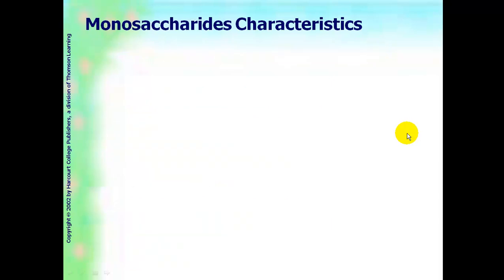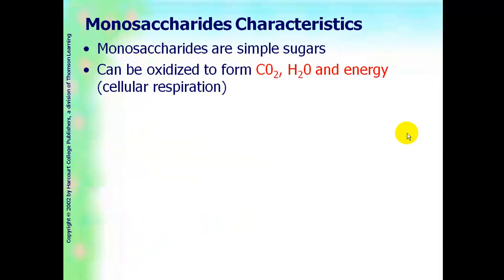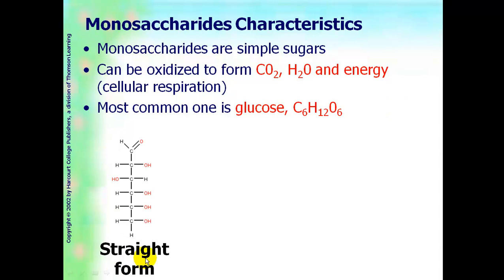First one we're going to talk about are monosaccharides. Monosaccharides are simple sugars. They can be broken down or oxidized to form carbon dioxide, water, and energy. That process we will learn later on in Chapter 7 as cellular respiration. The most common monosaccharide that you need to be familiar with is glucose, C6H12O6. Notice it is a carbohydrate because it is in the ratio of one carbon to double hydrogens to one oxygen in that ratio. Glucose can be written out in a straight form. And if you counted up all of these carbons, you would have six. You counted up all the hydrogens, you would have 12 and six oxygens. In the earlier description of a carbohydrate, we said there would always be a carbonyl group, which is right here, and all the other carbons will be bonded to a hydroxyl group.